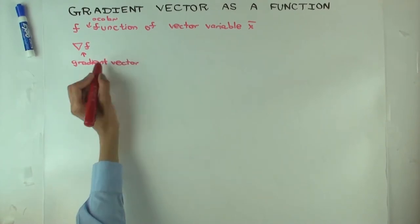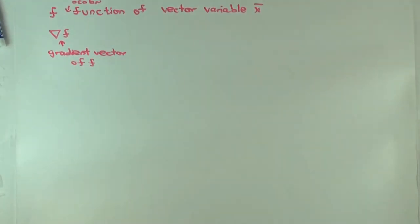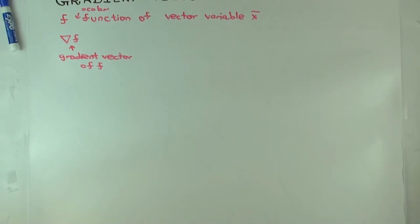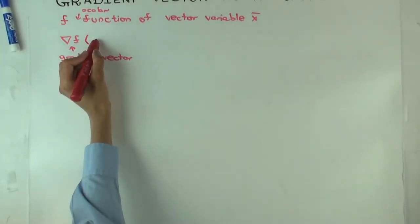I define what it is at a point. And what kind of a thing was it? It was a vector living in the same dimension as the input. So gradient vector of f at a point, let's say c.